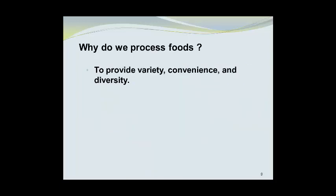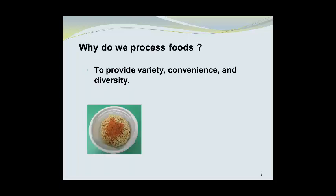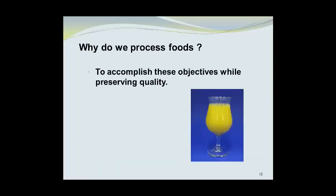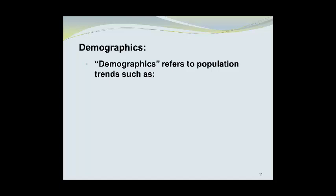Processing also provides variety, convenience, and diversity. Many people seek convenience, and here's an example of a highly convenient food. Here we see dried noodles with a dried spice blend. By adding hot water and stirring, the net result is a quick, convenient hot meal that's ready to eat in the same container as it was packaged. We also want to accomplish these objectives while preserving quality.